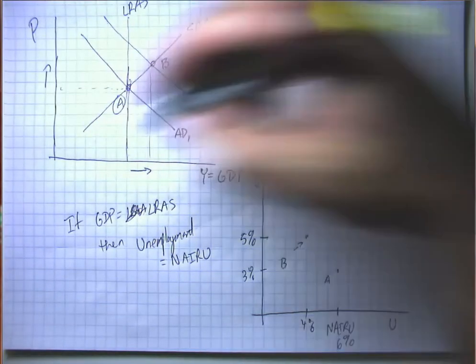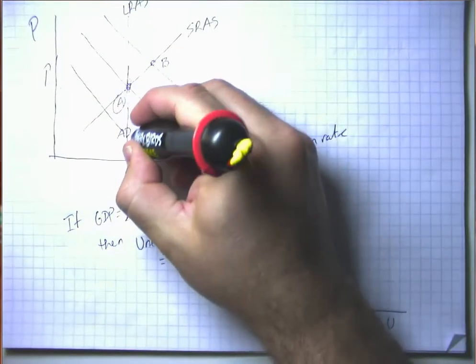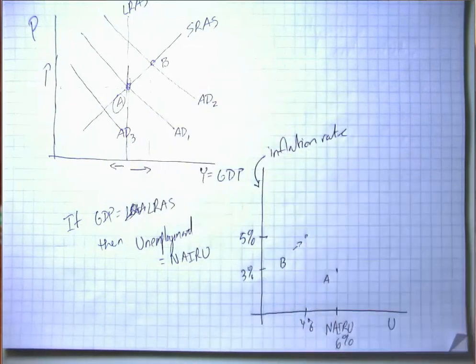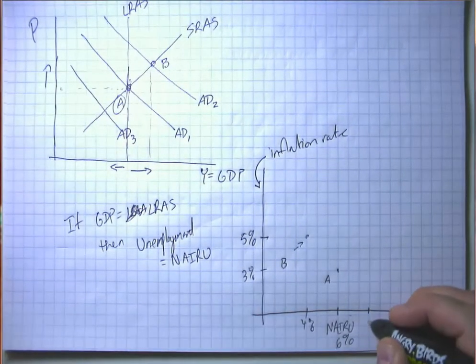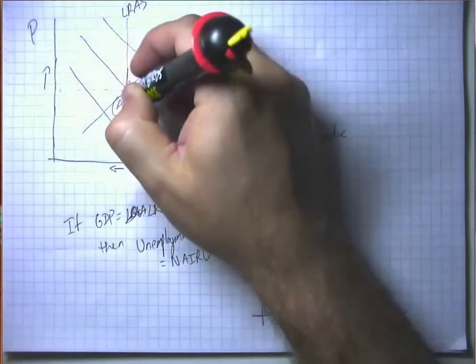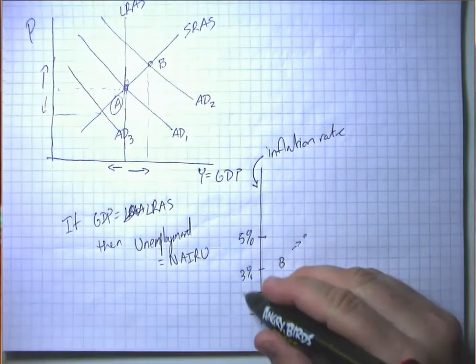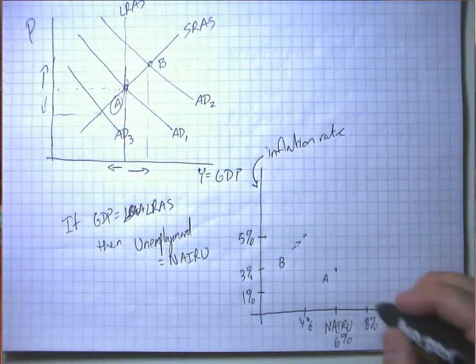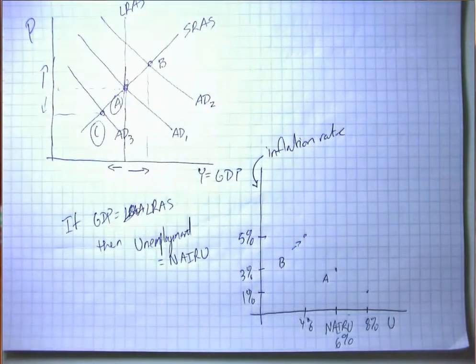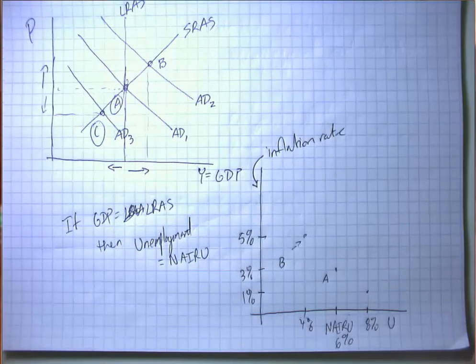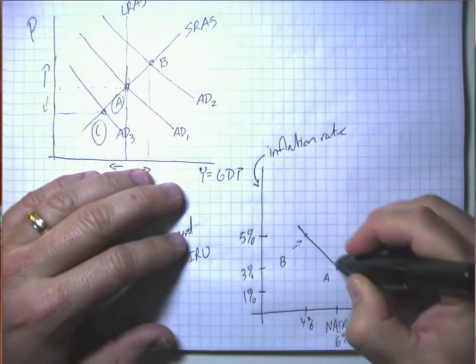If there had been a fall in aggregate demand instead, then we would have had a fall in GDP, thus a rise in unemployment, say to 8%. And the price level would have fallen. So inflation would have been lower, say 1%. So this point C in the aggregate demand, aggregate supply model diagram corresponds to this point C in the Phillips curve model.